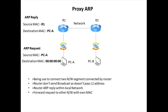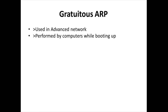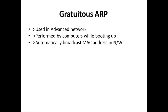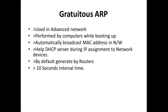Now let's discuss Gratuitous ARP. Gratuitous ARP is used in advanced networks and is also performed by a computer while booting up. When the computer turns on, it sends a gratuitous ARP — the computer automatically broadcasts its MAC address to the entire network. This plays an important role for IP assignment, allowing the DHCP server to know where the request came from. By default, gratuitous ARP is also generated by the router every 10 seconds, so each router sends gratuitous ARP updates to other routers and devices.